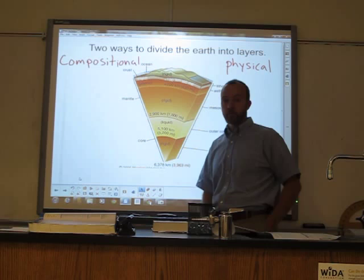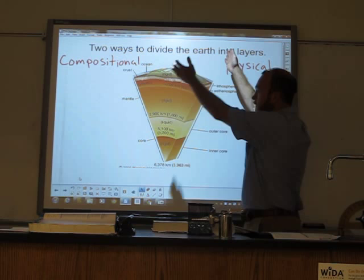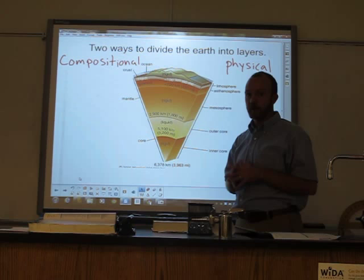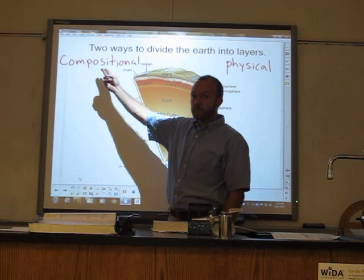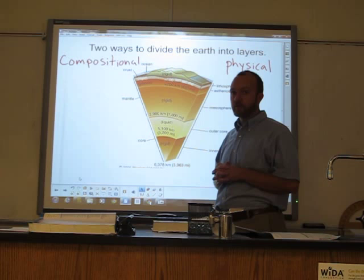First I want to start by talking about different ways to divide the earth. Here we have a picture representing a cross section of the earth — cutting to the center. We very often divide the earth into layers and classify it. Commonly that's done two different ways. One way is what we call compositional layers — based on the earth's chemistry, what it's made out of.